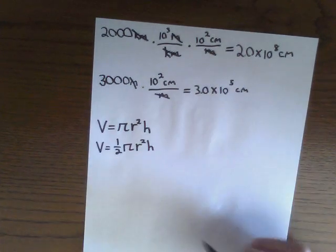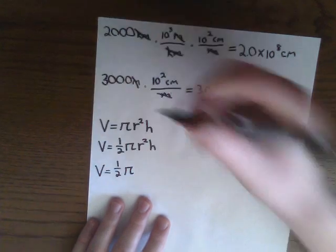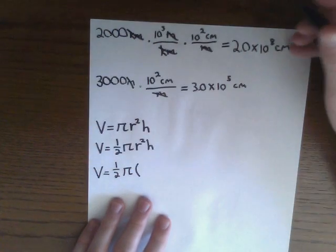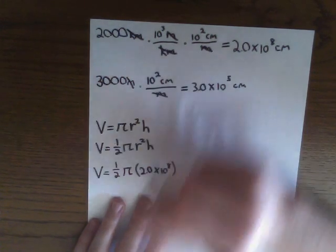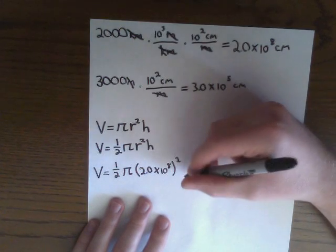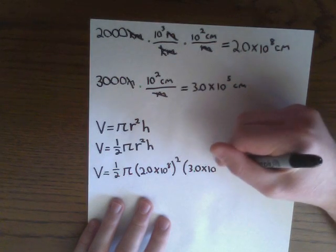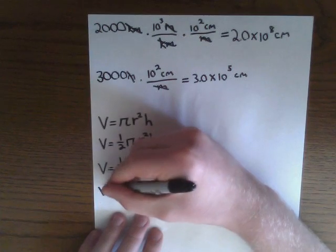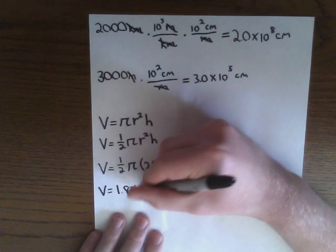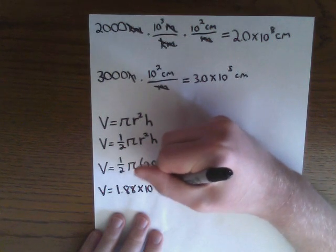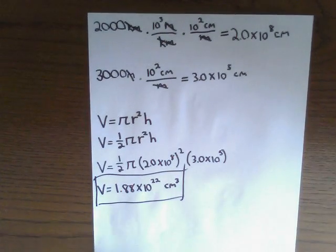Now we just simply plug in our numbers. Our volume will equal one half of our value of pi times the radius that we found to be 2.0 times 10 to the eighth. But we have to square that term. And we multiply that by the height, which we found to be 3.0 times 10 to the fifth. When we multiply that out, we will find that our final volume will equal 1.88 times 10 to the 22nd centimeters cubed of ice. And that is our final answer.